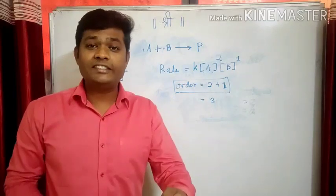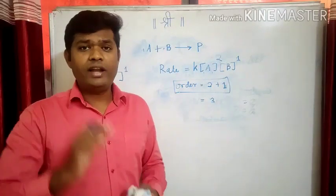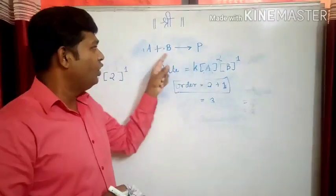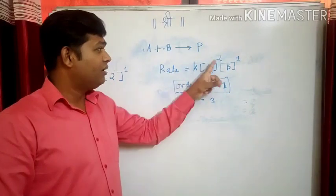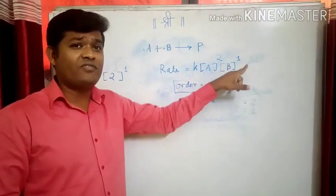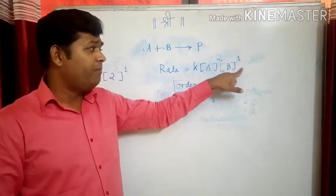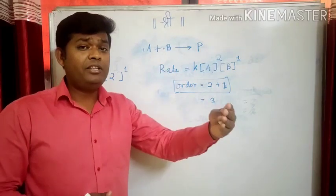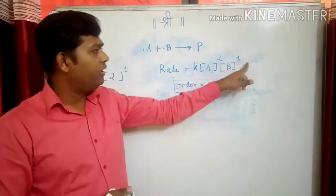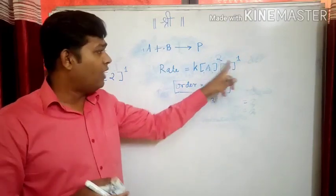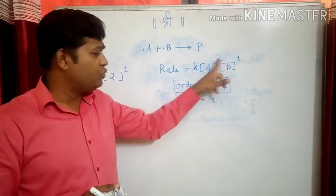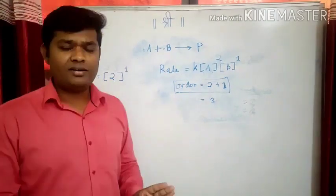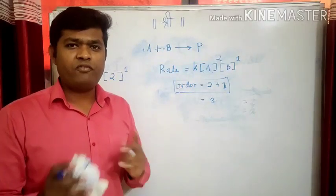The order of the reaction is 3 and this reaction is called a third order reaction. Coefficient of A is 1 but the order is not 1 — order with respect to A is 2. Coefficient of B is 1 but this does not mean the order is 1; the order of B is 1 as determined by experiment. The power of A is 2 and the power of B is 1, so 2 plus 1 gives the order of reaction as 3. Coefficients are not order — order is determined by performing the experiment.